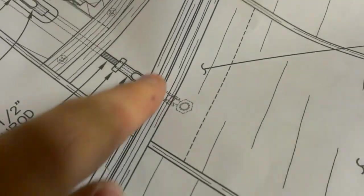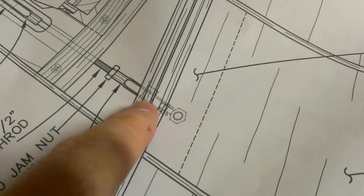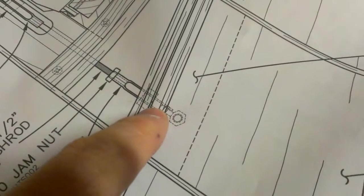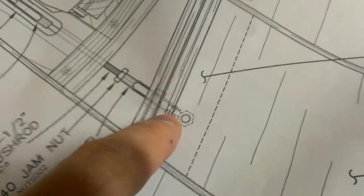You can see this is the hinge line right here, and then here's the pivot point. It's about, looking at it, probably 3/16ths, maybe a quarter of an inch, the pivot point behind the hinge line.